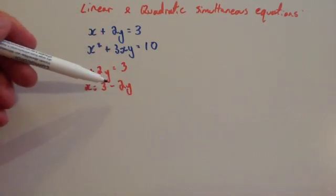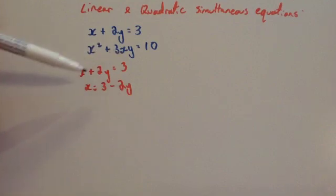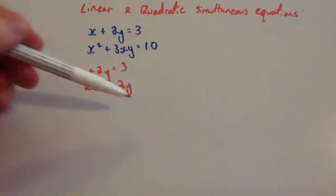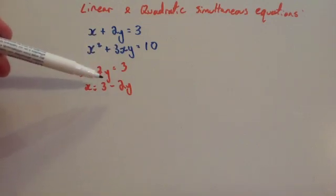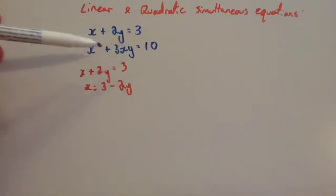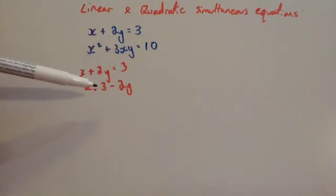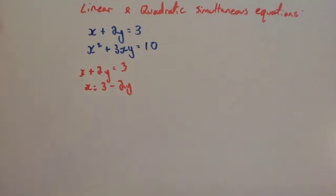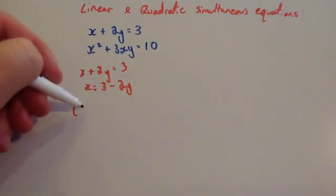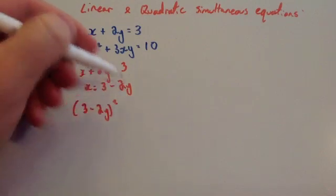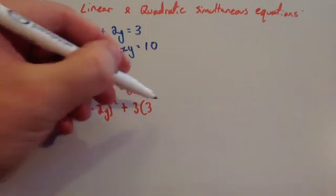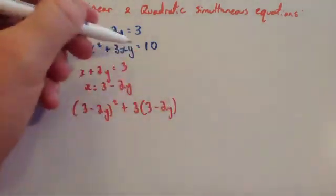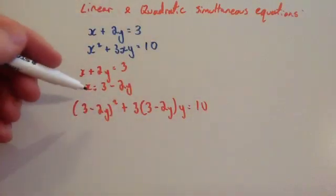We're now going to substitute that into the quadratic equation. So instead of x squared we'll write in brackets (3 minus 2y) squared, plus 3 times (3 minus 2y) in brackets times y, equals 10. In other words, we replace the x in this equation with 3 minus 2y.